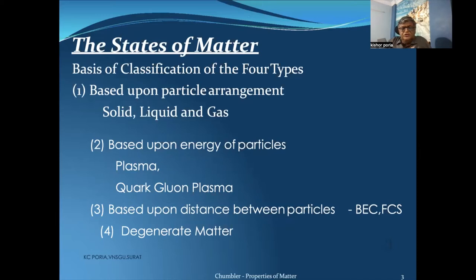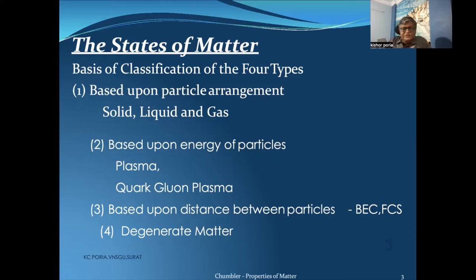We can also classify states of matter based on particle arrangement — solid, liquid, and gas; based on energy of the particles — plasma and quark-gluon plasma; and based on distance between particles — Bose-Einstein condensate and Fermi-Dirac condensate. One more class is degenerate matter, in which many newer types of states of matter are added.